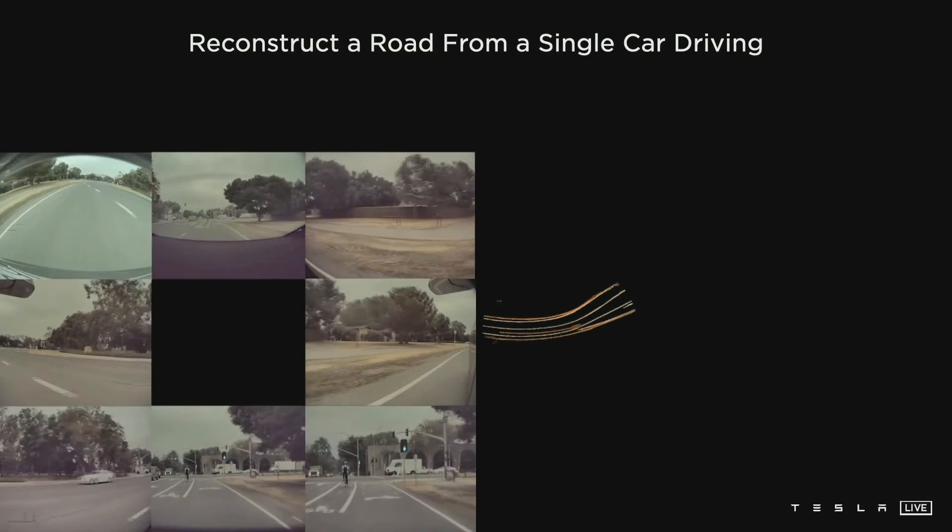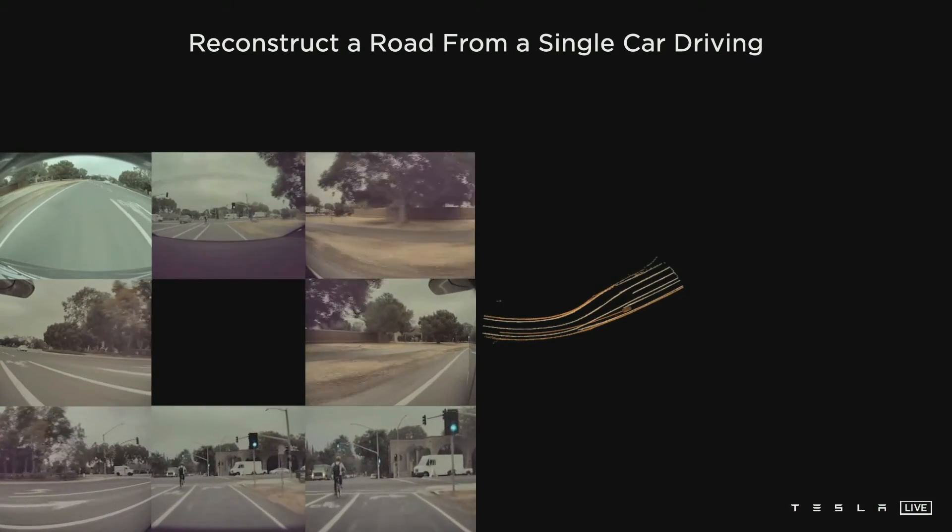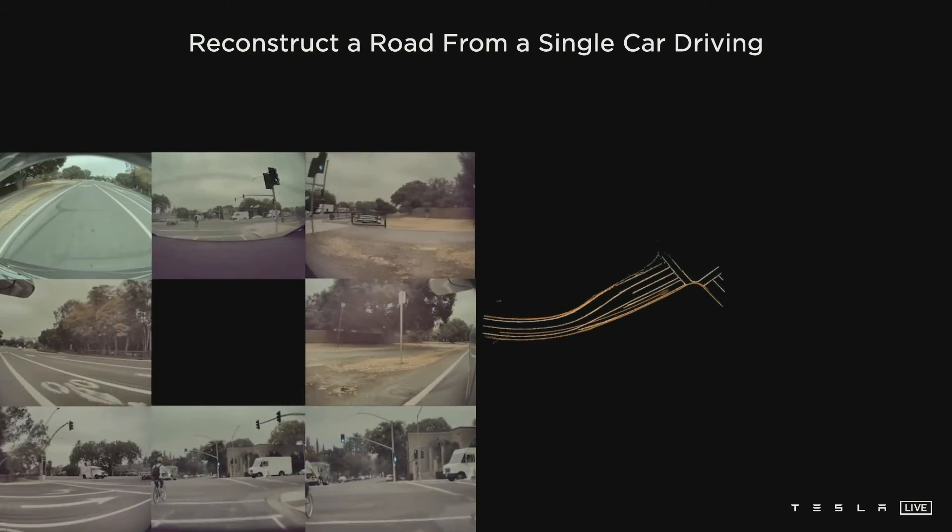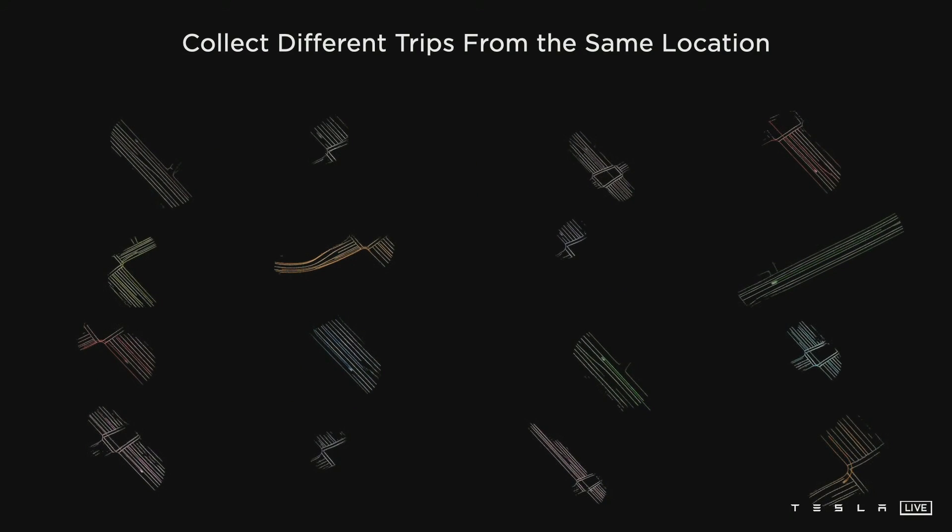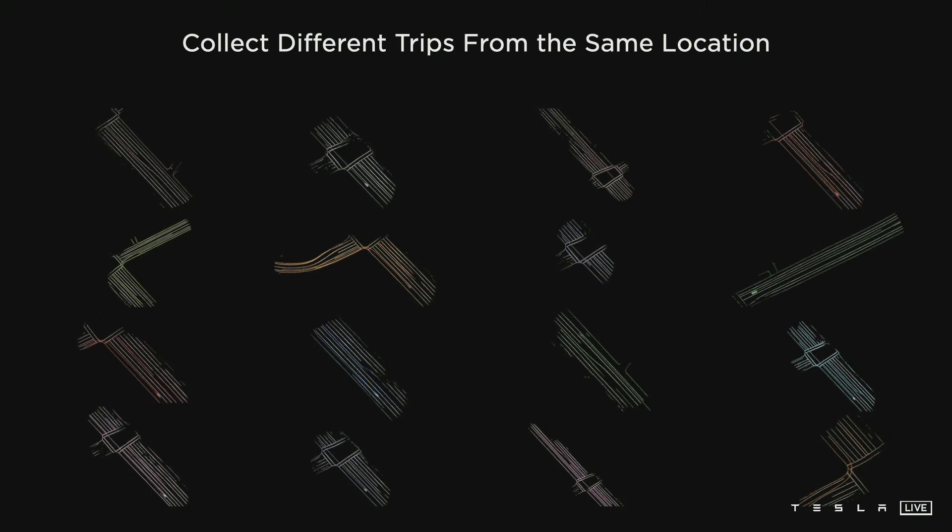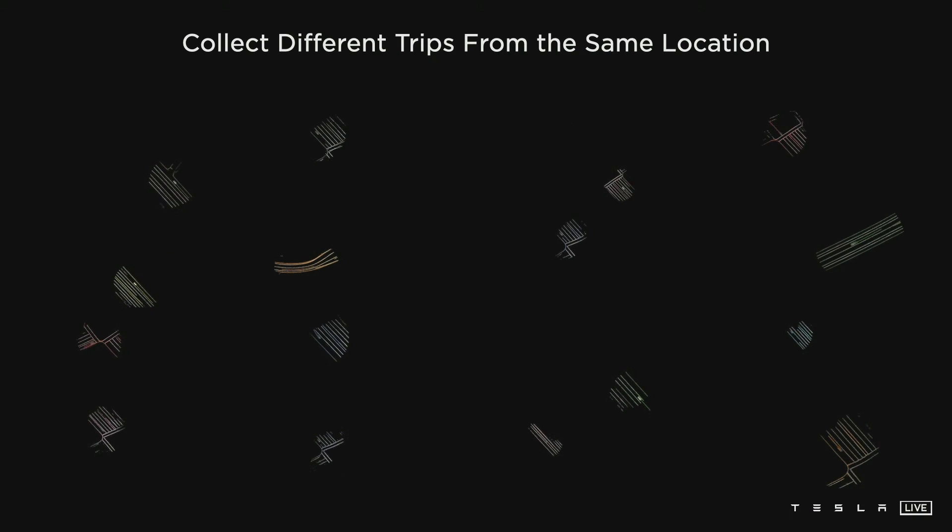A single car driving through some location can sweep out some patch around the trajectory using this technique. But we don't have to stop there. Here we collected different clips from the same location, from different cars maybe, and each of them sweeps out some part of their road.